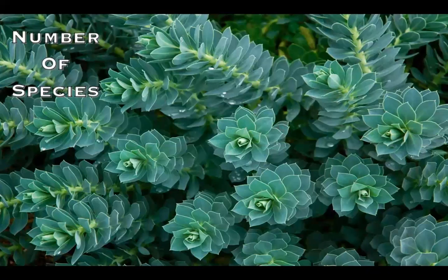It is widely accepted in science that Euphorbiaceae is the fifth largest family of flowering plants. Overall, the number of genera falls within the range of 250 to 300.